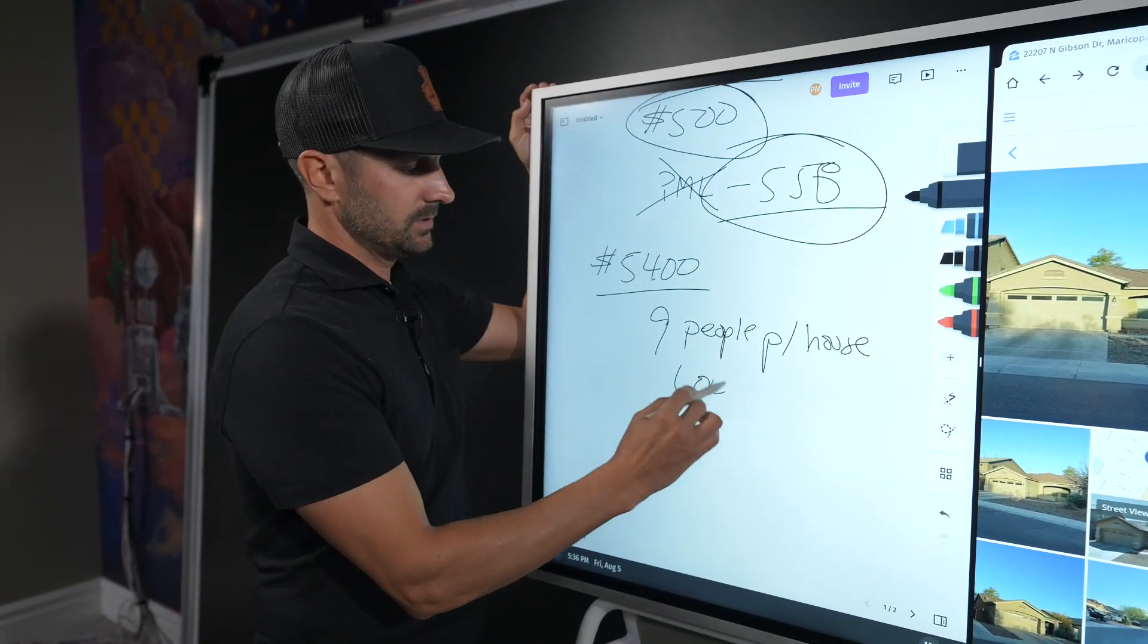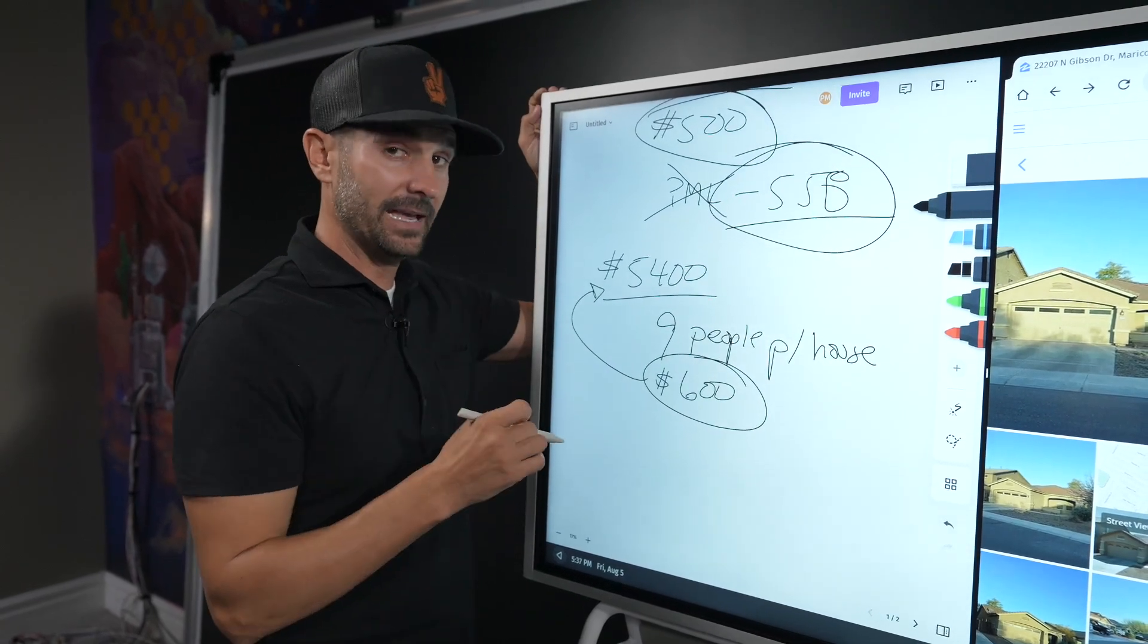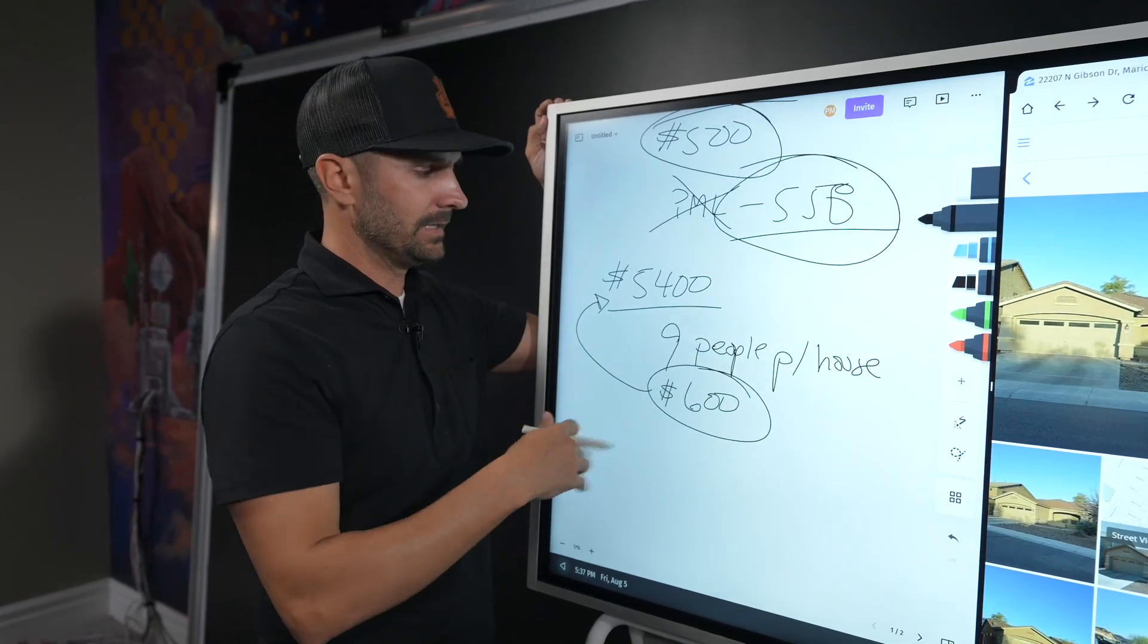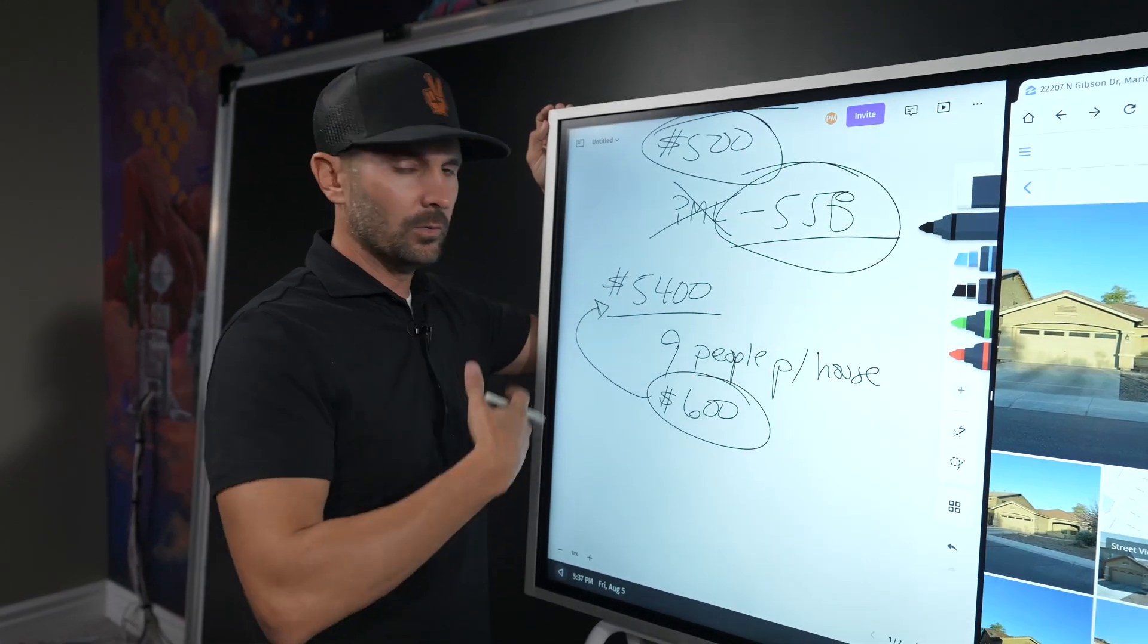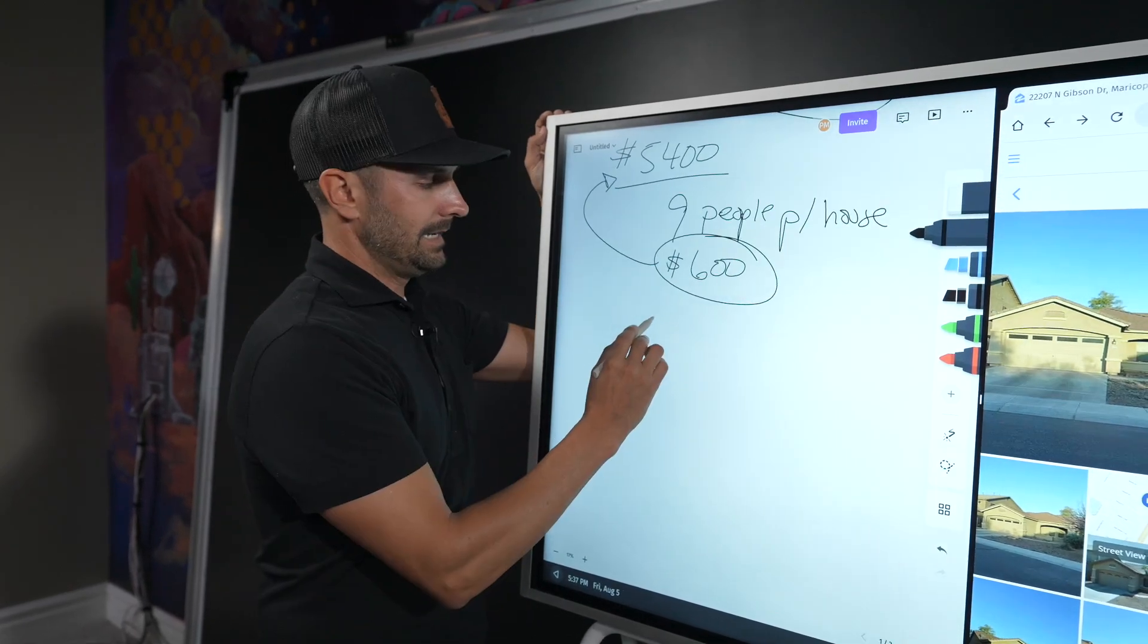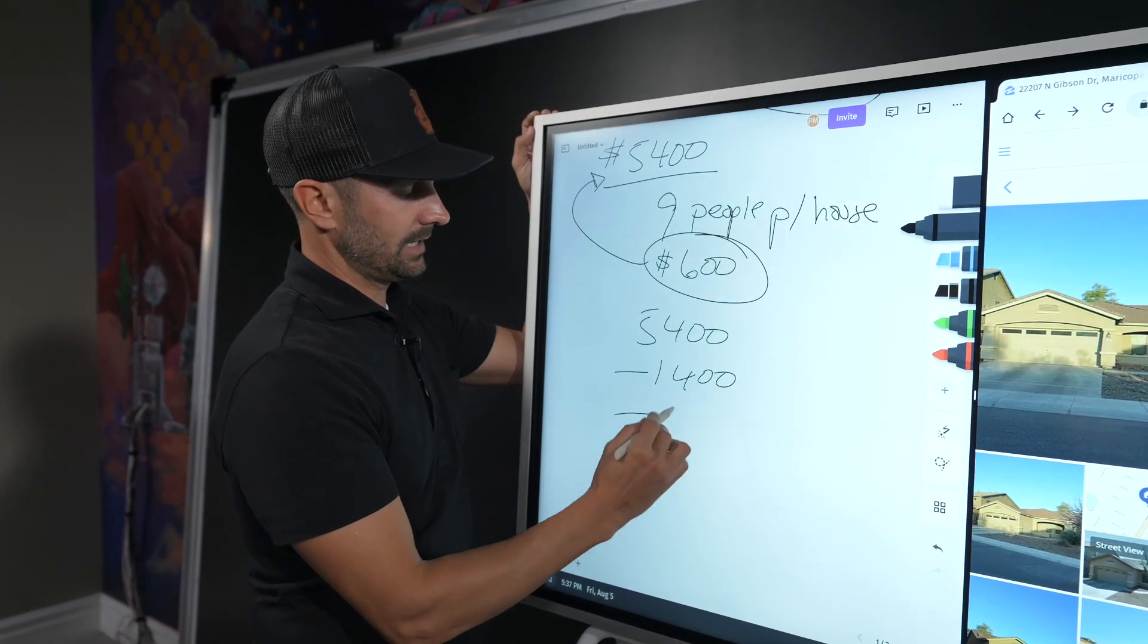I don't think it's an Airbnb neighborhood. If you turn this into a sober living, this could rent out for $5,400 per month. Why is that? Well, typically a sober living facility can get nine people per house before they have to go and get fire sprinklers and certain certifications. They charge these people $600 per person to rent out a bed, not a room, a bed.